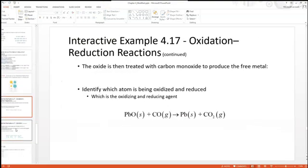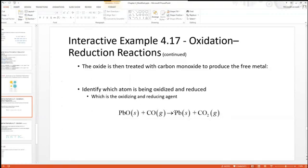Here are some examples. We can calculate the oxidation state of every element in here. Pb would be plus two, O would be minus two, carbon would be plus two, and oxygen would be minus two. On the right side, Pb lead is now zero since it's by itself, and carbon is plus four. So lead goes from positive two to zero, meaning the oxidation state decreases, meaning it's reduced.